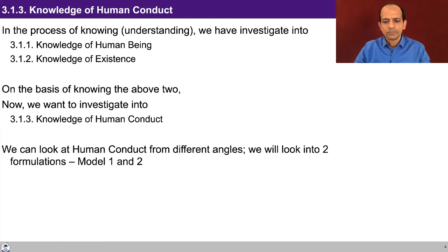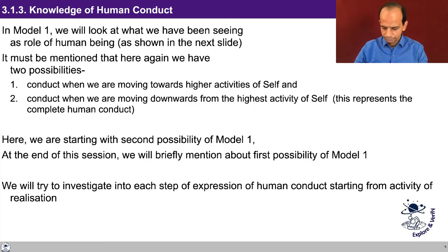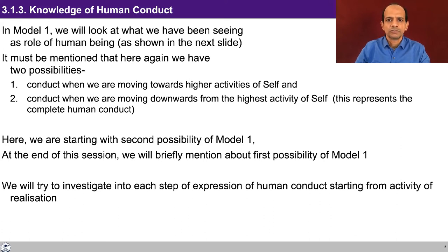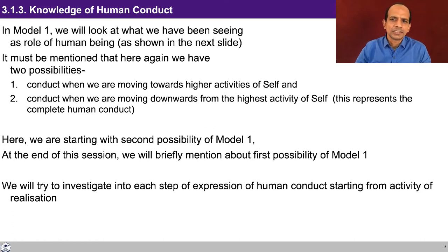We look at human conduct from two different angles — two formulations: model one and model two. We'll try to see the difference in the two models. Model one is based on the clarity we had while discussing content in modules three and four. There could be two possibilities: one is when we are moving from Block B2 to Block B1, that is moving from the lower activity to the higher activities. The other possibility is that realization is there, and with that we are moving to the lower activities — the lower activities are guided by the higher activities.